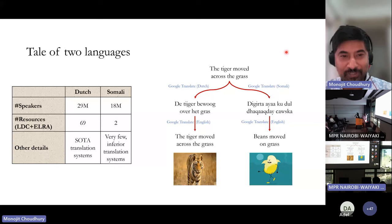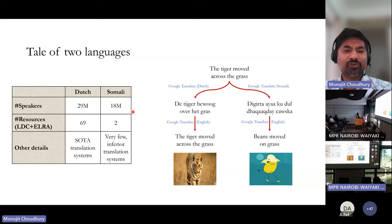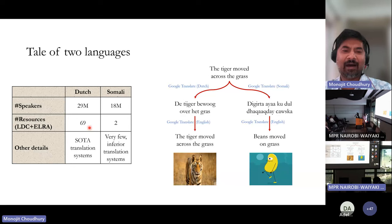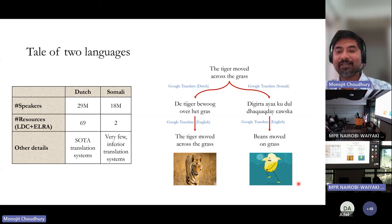That gap is reducing — that's great news. However, not everything is rosy. Consider two languages: Dutch and Somali. Both are spoken by a couple of dozen million speakers. But the investment in building technology for these languages is vastly different. Dutch has around 69 resources, which is a healthy count, whereas Somali had only two resources. When we tried a state-of-the-art translator for both, it did a perfect job for Dutch, but for Somali, 'the tiger moved across the grass' became 'beans moved on the grass.'